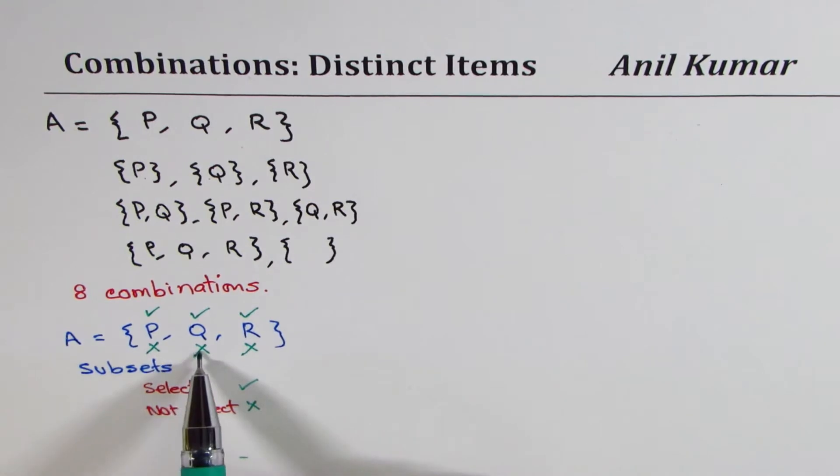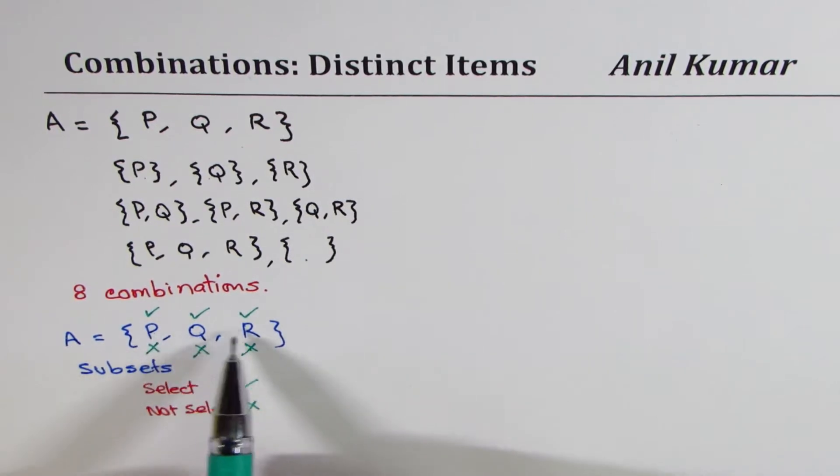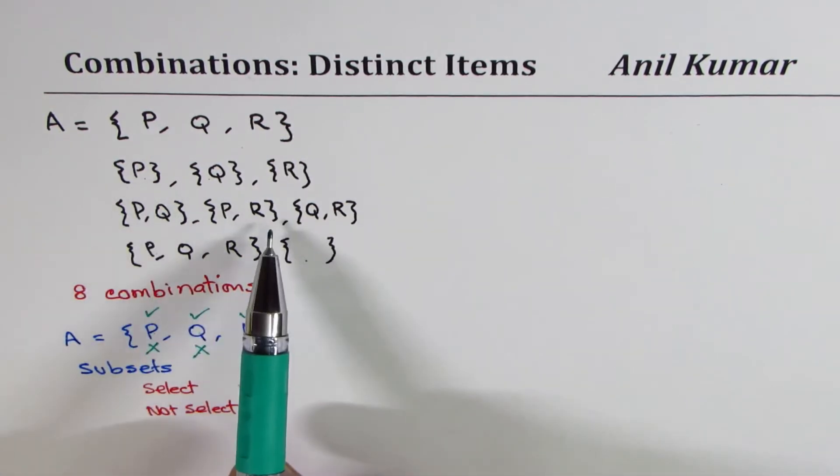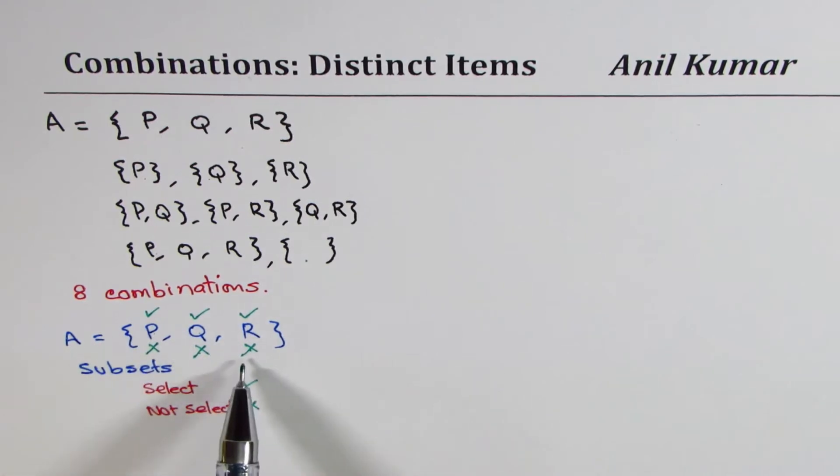So if I do not select any one of these three, I get the null set. If I select all of them, I get this set in which all are selected. And if I do combinations, I get the other six. Do you see that? So this concept basically helps us to write in short all possible combinations. How many are these?